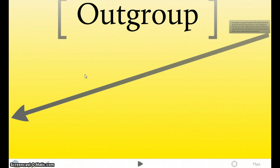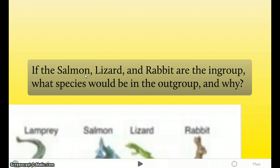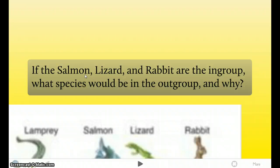So if you guys are confused, don't worry, I'm about to incorporate these two new terms in a nice diagram over here. So here's another Cladogram, let's go for our next question. If the Salmon, Lizard, and Rabbit are the In-Group, what species would be the Out-Group and why?